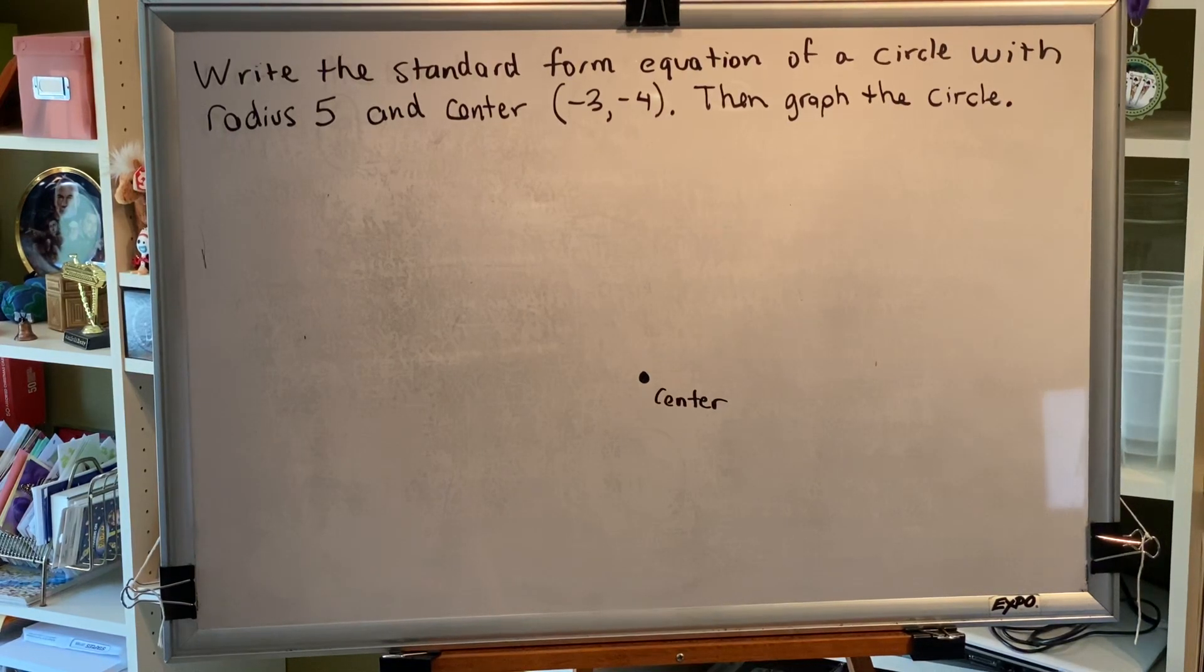The topic of this video is graphing circles. One way to quickly and easily graph a circle is to plot its center, then use the radius to plot points that are above, below, left of, and right of it. The circle can be drawn through those four points.